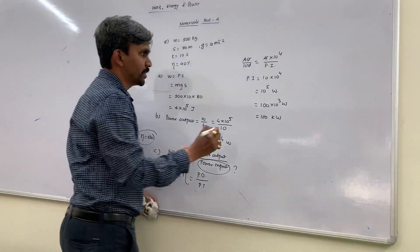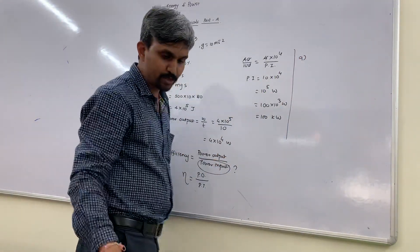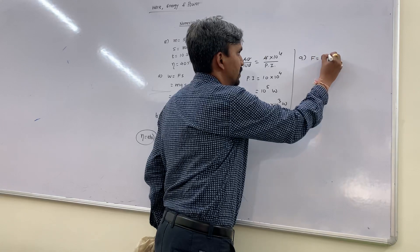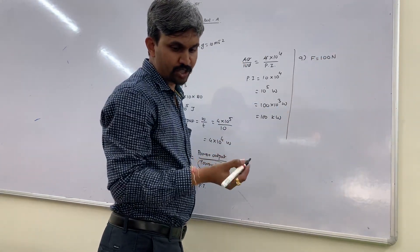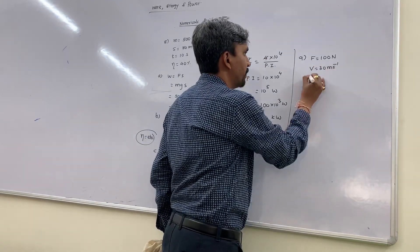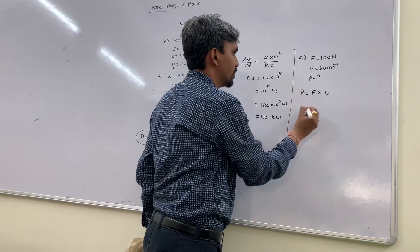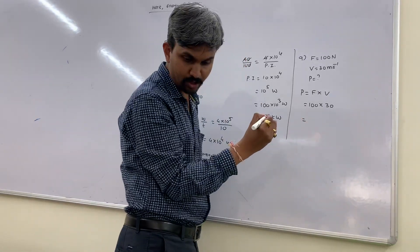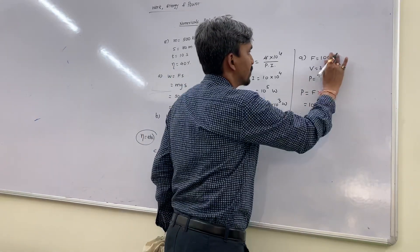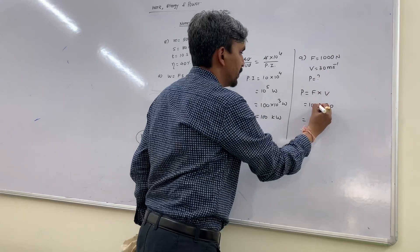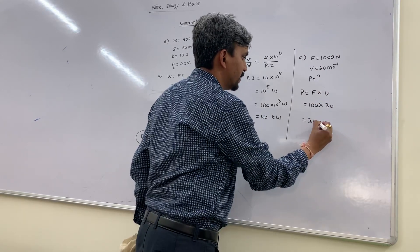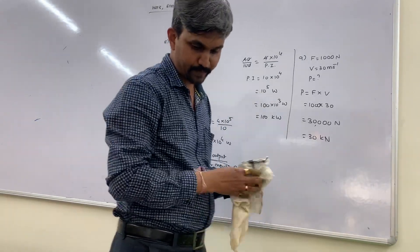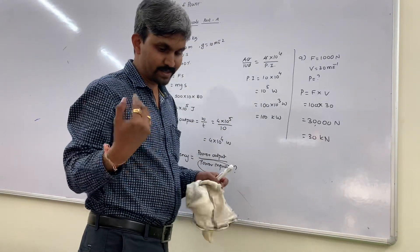Ninth numerical: an ox can apply a maximum force of 1000 Newton with a constant speed of 30 m/s. Power = force × velocity = 1000 × 30 = 30,000 Watts. Numericals 10 and 11 are similar, so I am not doing those.